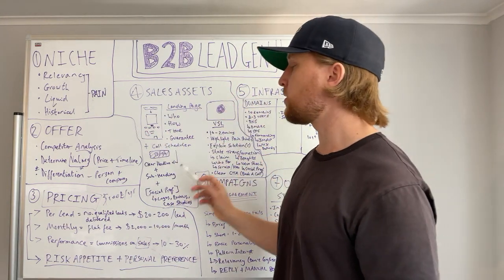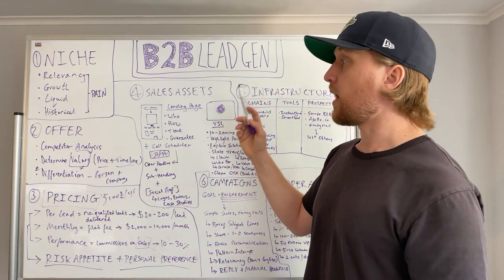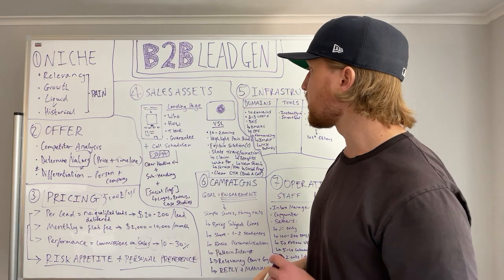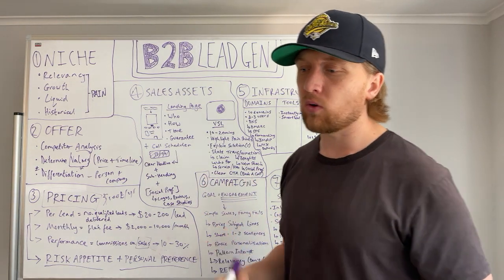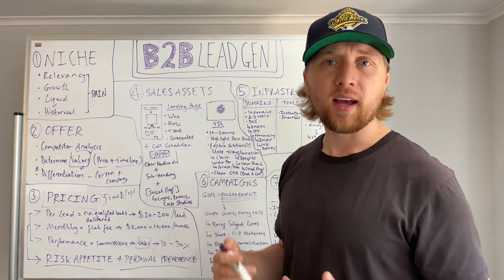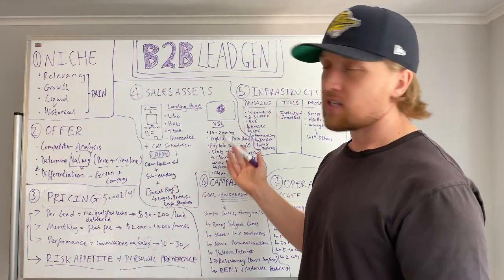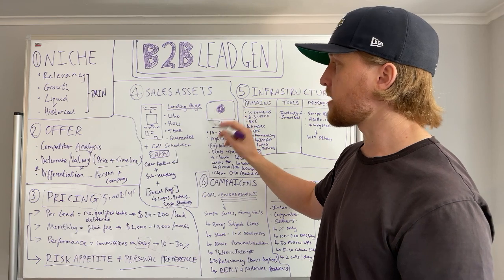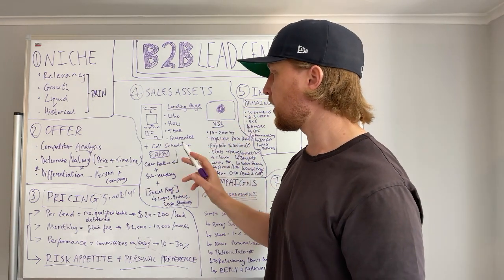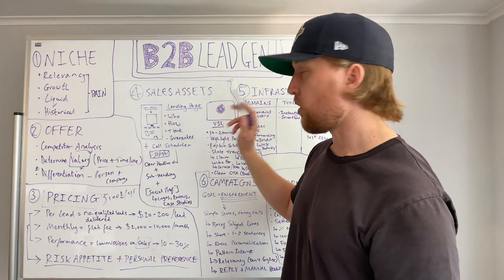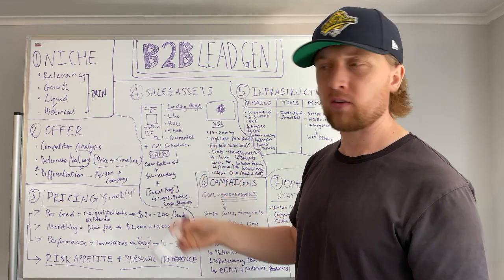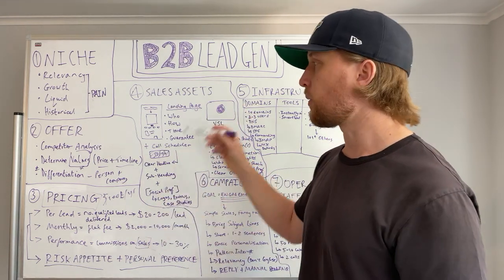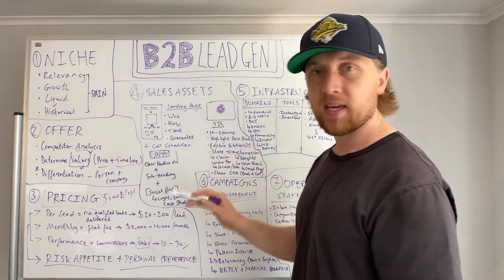Number four is sales assets. To generate leads for your agency and your clients, you need some sales infrastructure in place so prospects can find you online. That typically comes in the form of a landing page. Don't get bogged down creating many website pages — create a simple landing page. Include a clear headline and subheading that calls out your ideal client profile and clearly states who you help.